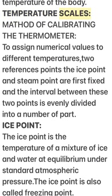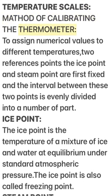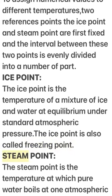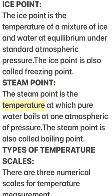Temperature Scales — Method of calibrating the thermometer: To assign numerical values to different temperatures, two reference points — the ice point and steam point — are first fixed, and the interval between these two points is evenly divided into a number of parts. Ice point: The ice point is the temperature of a mixture of ice and water at equilibrium under standard atmospheric pressure; it is also called the freezing point. Steam point: The steam point is the temperature at which pure water boils at 1 atmosphere of pressure; it is also called the boiling point.